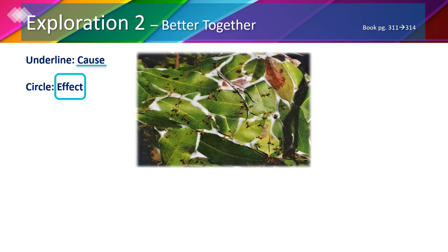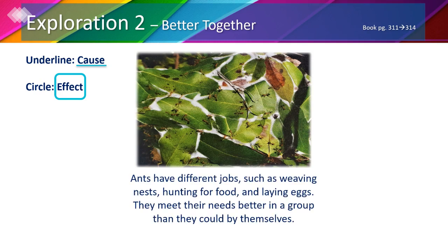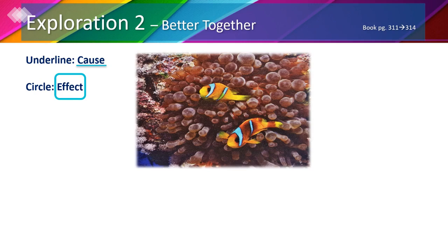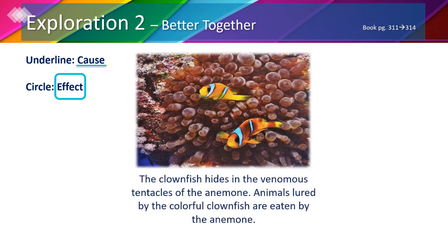Ants have different jobs such as weaving nests, hunting for food, and laying eggs — they meet their needs better in a group than they could alone. The clownfish hides in the venomous tentacles of the anemone; animals lured by the colorful clownfish are eaten by the anemone. So the clownfish and the anemone live together to help one another.